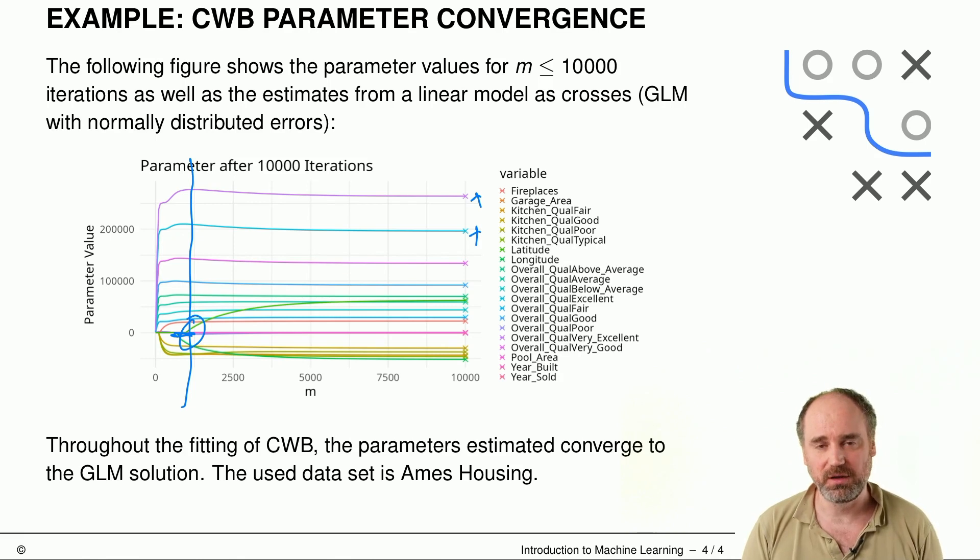I could now also plot the loss developments next to this or plot the validation loss, and then we could discuss whether we would rather prefer a sparser model or something that's more complete in terms of included variables.